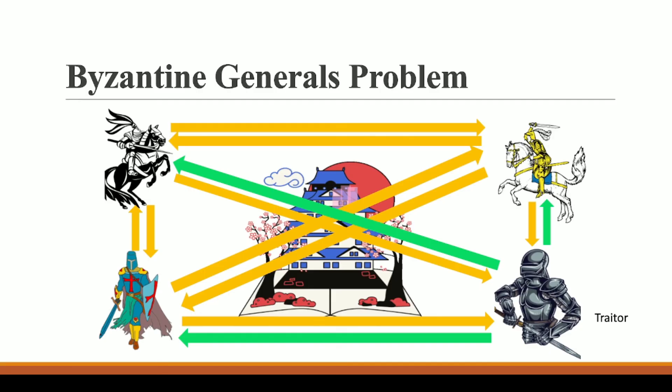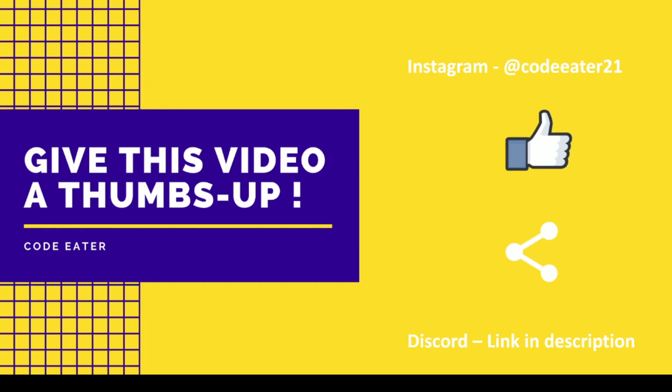In the context of distributed computing, where distributed computers are all over the network, they need to depend upon the majority to verify and validate information. This majority-based consensus is the solution to the Byzantine Generals Problem.